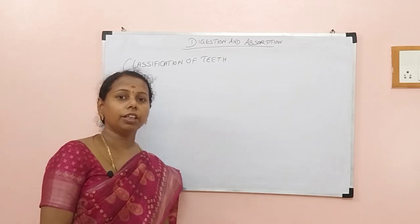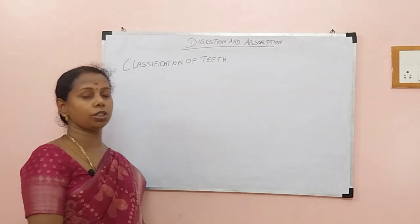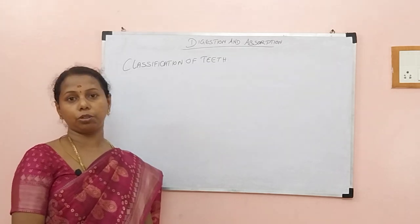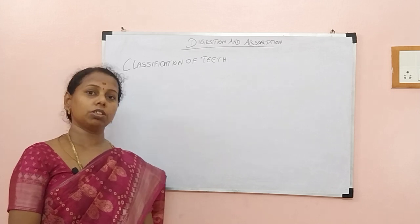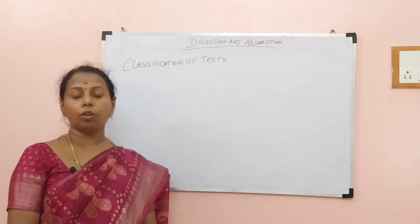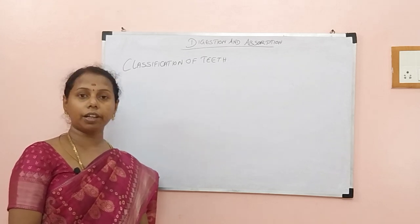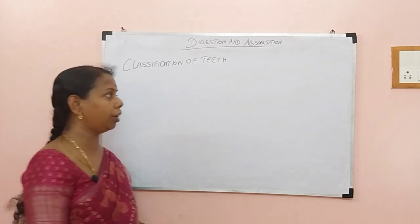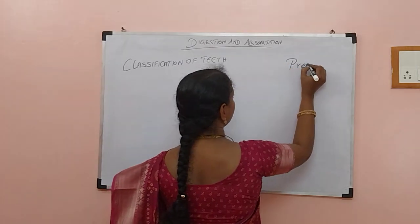Very good morning children. In this video we are going to discuss about classification of teeth. Before that, in the last video we discussed two questions. You know the primary kid's mother was checking the absence of teeth in her daughter, and she analyzed all the children of the class not having the teeth. So what was the teeth I asked you? It is premolar — many of you answered. Yes, it is premolar that children only are having.